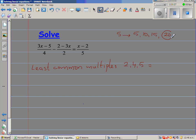When you stop at 20 and think about it: 2 goes into 20 ten times, 4 goes into 20 five times, and 5 goes into 20 four times. So the least common multiple is 20.